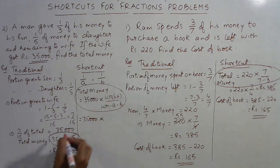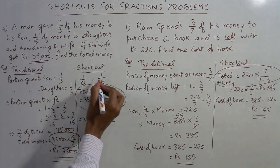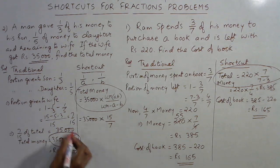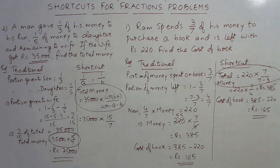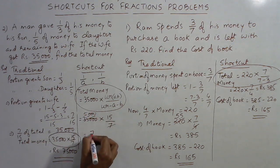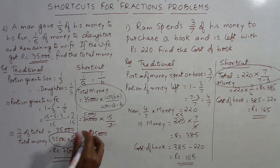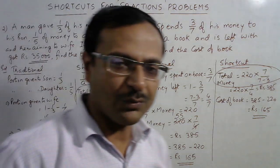Applying this: 35,000 × 15/7. Cancel the 7 — that's 5,000 — then 5,000 × 15 = ₹75,000. This matches the traditional method answer. It may sound a little uncomfortable to remember at first, but with practice anything can be achieved. People who succeed in competitions in their first attempt know all these kinds of shortcuts.